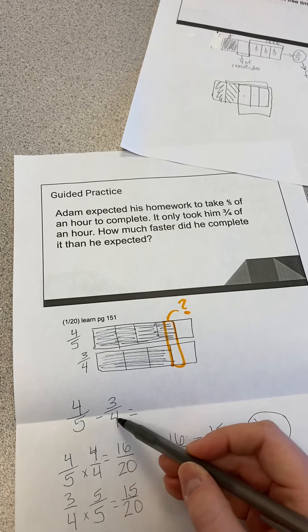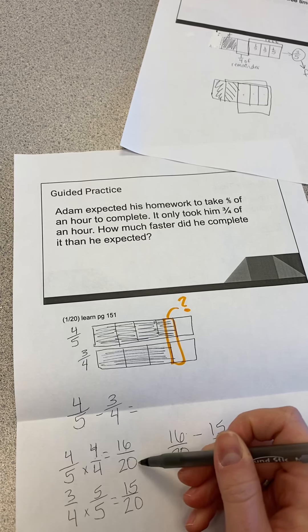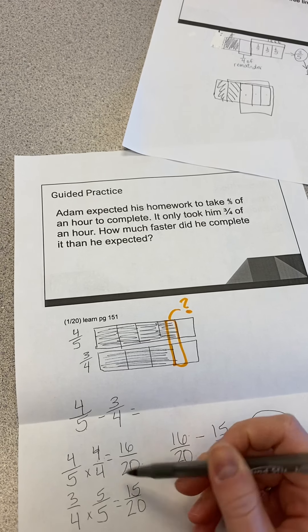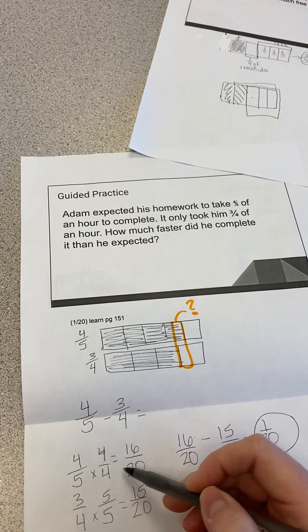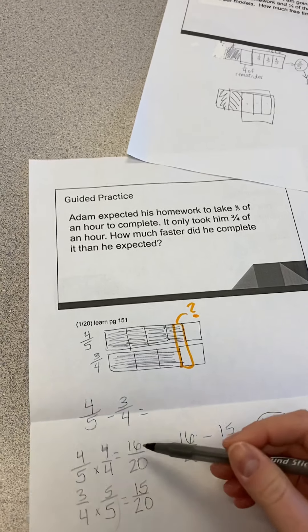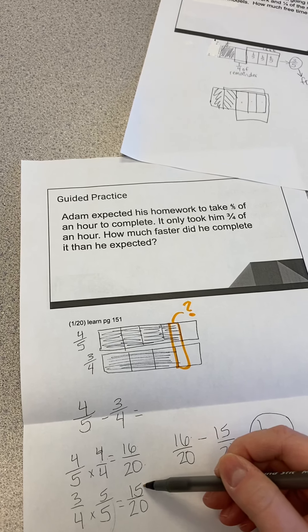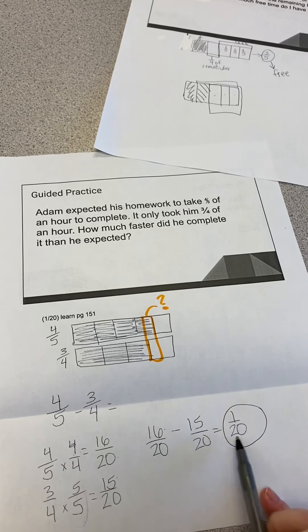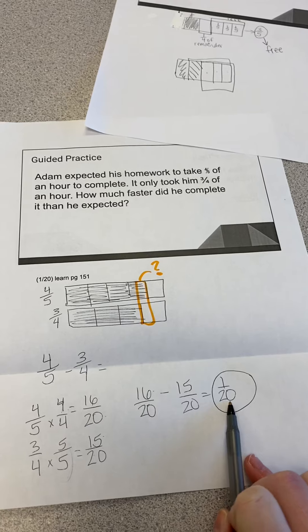So 20 would be a great common denominator to find. For me to go from 5 to 20, I have to multiply by four-fourths. And for me to go from 4 to 20, I multiply by five-fifths. So now I have 16-20ths and 15-20ths. And when I subtract those, I get one-twentieth.